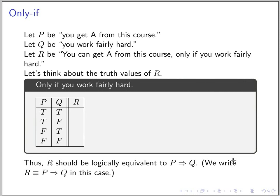When two propositional forms are logically equivalent, it means they have the same truth value in all possible cases. We write this using the three-line equivalence operator.